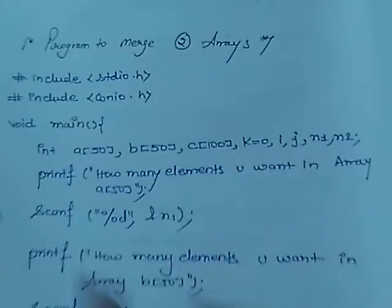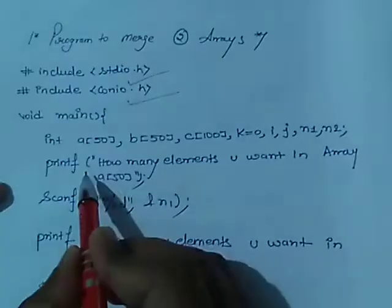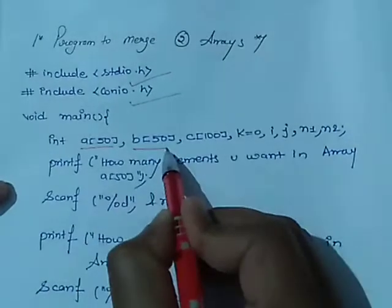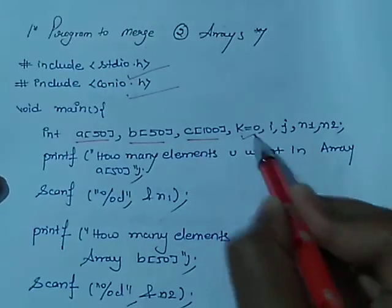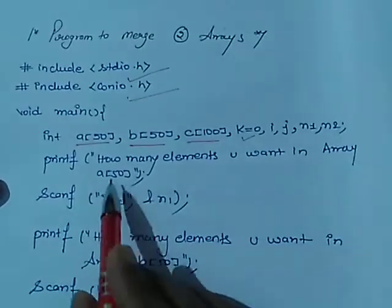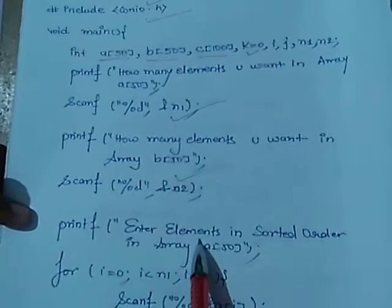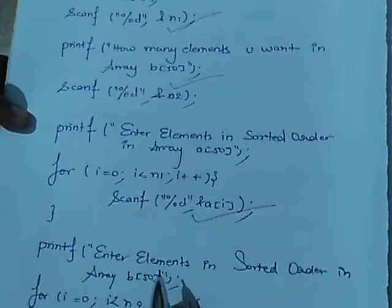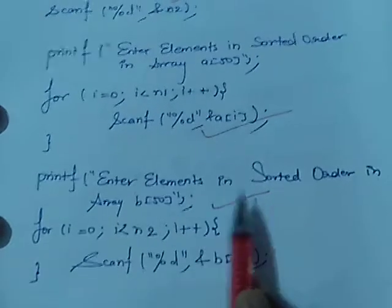In the program we have included stdio.h and conio.h. We have taken two arrays of size 50 and a third array to hold the merged elements. Variables k=0, i, j are used for loops, and n1 and n2 are the sizes of arrays a and b. Enter how many elements you want in array a, how many in array b, and then enter elements in sorted order for both arrays.